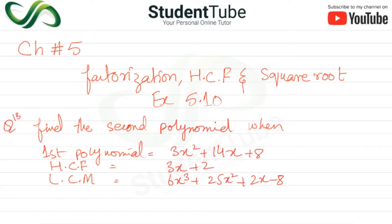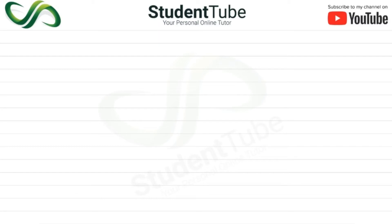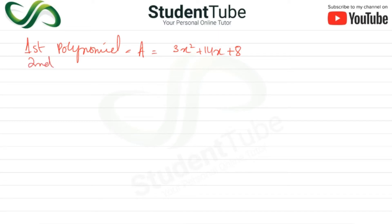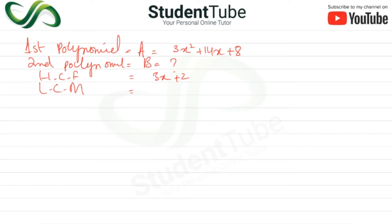Let's start. First we write the data. First polynomial A is equal to 3x² + 14x + 8. Second polynomial B is unknown. HCF is 3x + 2.